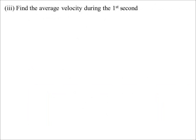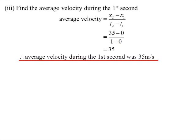So if we're going to find the average velocity, then it would be, well, we just said that after the first second, we're at 35 metres. So, 35 minus 0 over 1 minus 0, which is 35. So the average velocity for the first second was 35 metres per second.